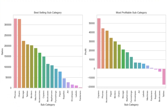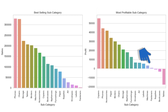What can we learn from the bar plots? Phones and chairs are the top two best-selling subcategories. Copiers produce the most profit, followed by phones, accessories, papers, and binders — the marketing strategy should focus on these products. On the other end of the spectrum, machines, fasteners, supplies, bookcases, and tables make close to zero margin or losses. These are products that Superstore can consider dropping from the product catalog, increasing the sale price and profit margin, or bargaining for a lower price from the supplier.